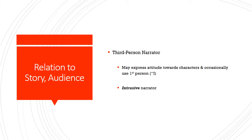A third-person narrator may sometimes express attitudes, ideas, or opinions towards the characters, and may occasionally use the first person — they may say 'I think this.' But it's still a third-person narrator if they're predominantly using the third-person perspective. This is what we call an intrusive narrator: even though they're outside of the story, they intrude on it by giving their own comments or thoughts.